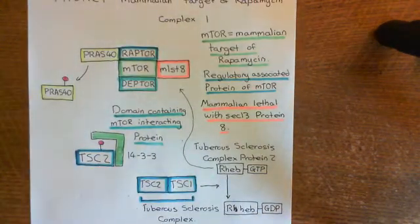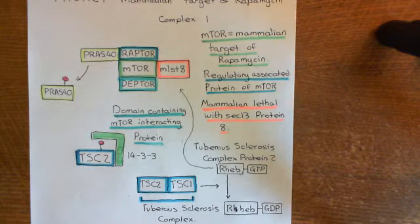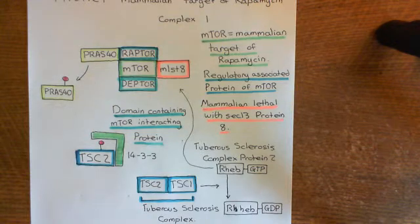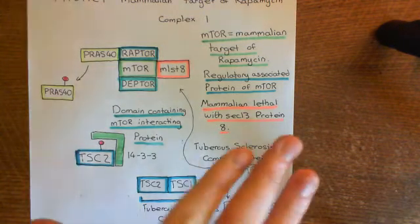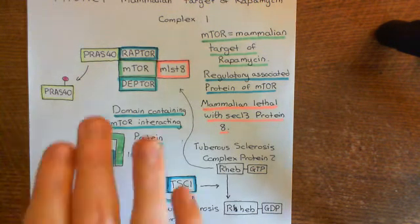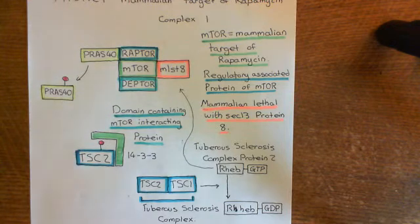The mammalian target of rapamycin complex 1 then causes differentiation and proliferation of the T cell, leading to final activation of the T cell. The drug rapamycin, or sirolimus, is going to come in and bind to mTORC1 and stop it from becoming active. Even if AKT becomes active and tries to activate mTORC1, if the rapamycin drug is bound, it will not succeed — mTORC1 will not activate.